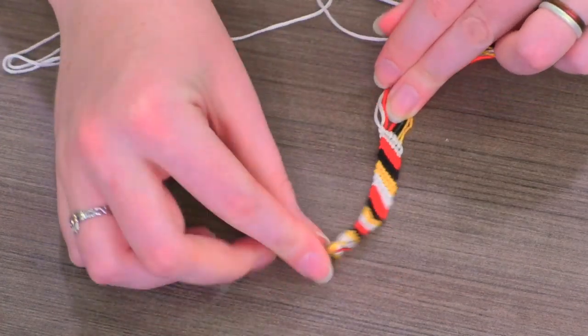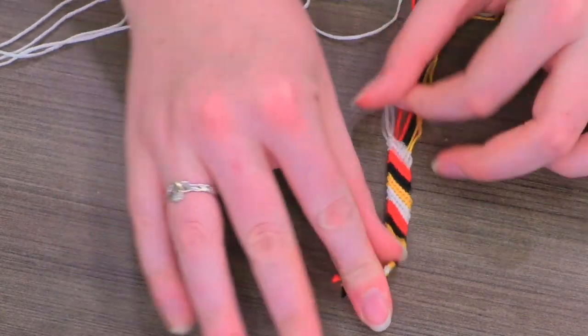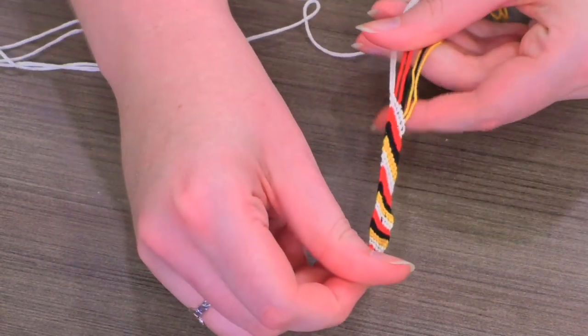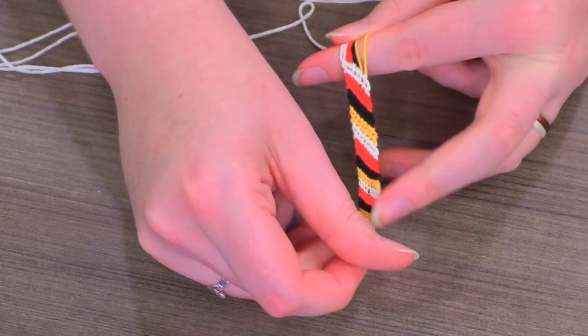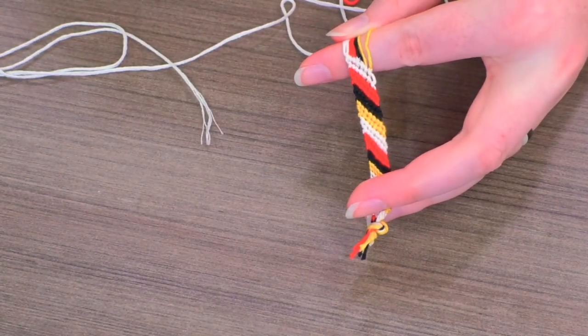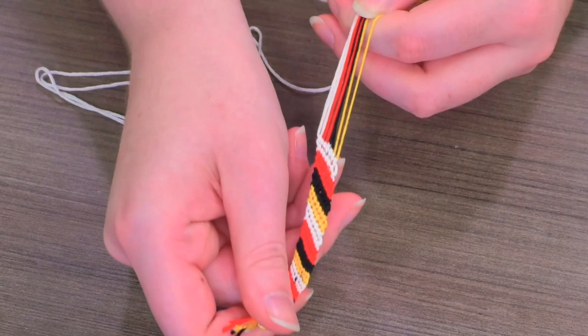There's the start of the bracelet. See the knot at the top. And then you would just keep going until it's long enough to go around your wrist or you want it to be a tassel or a bookmark or whatever. And that's how you make a striped bracelet. So you just keep going.